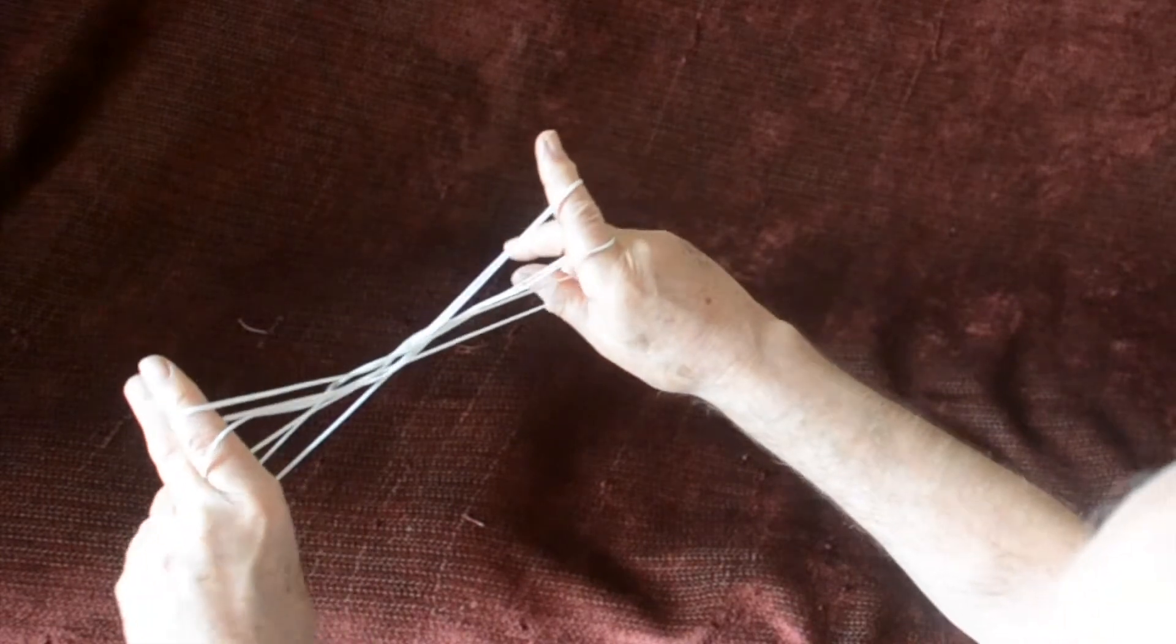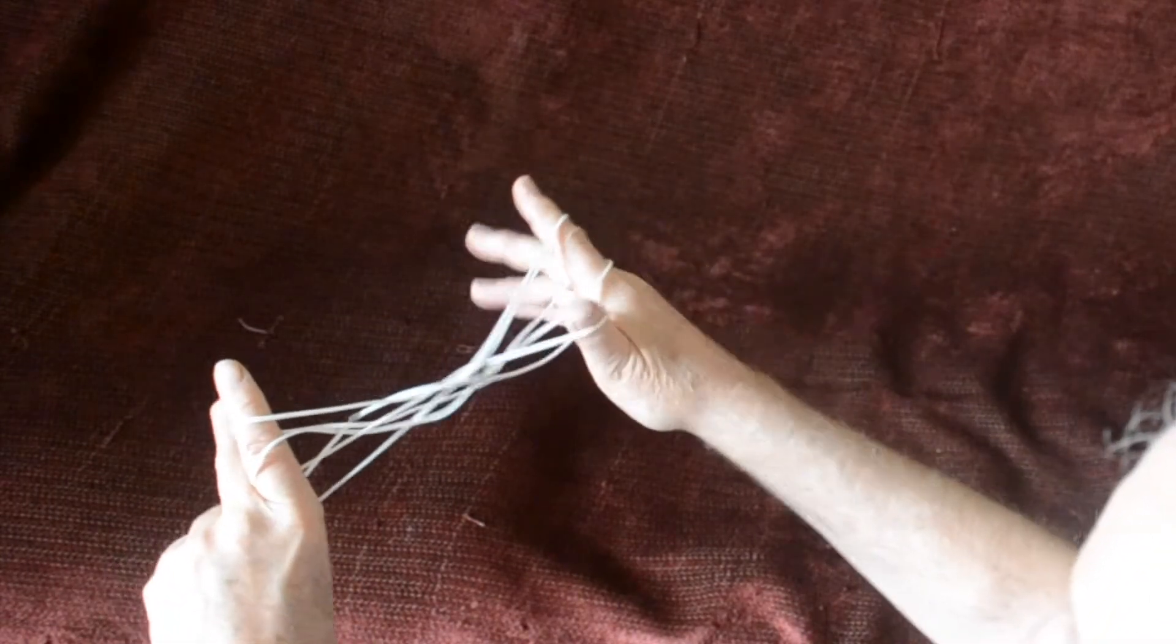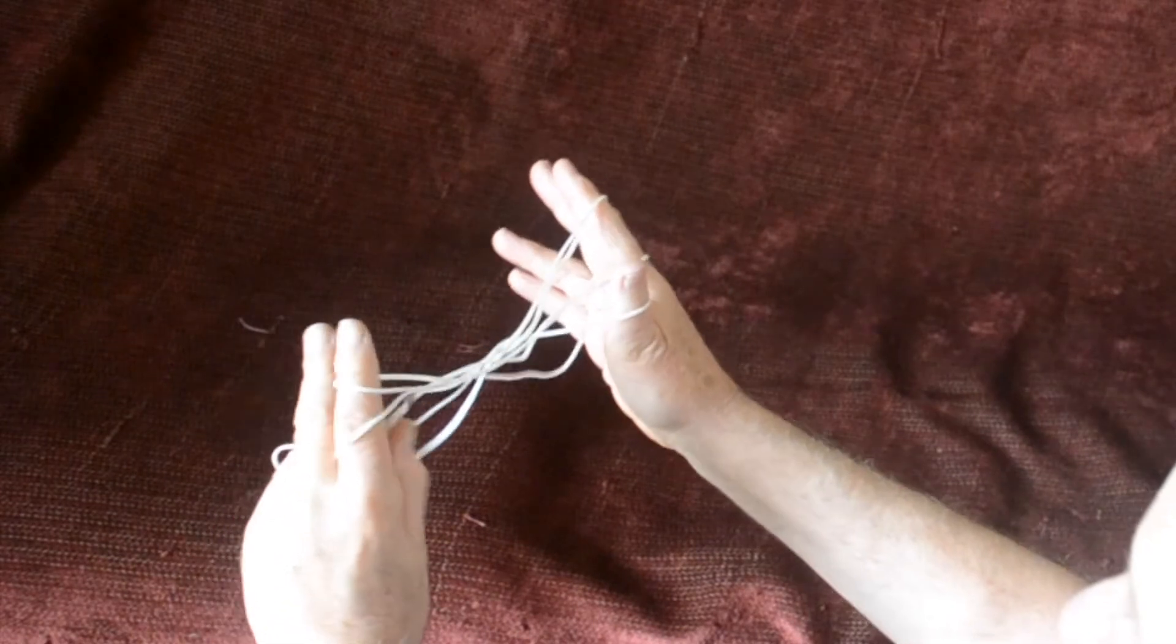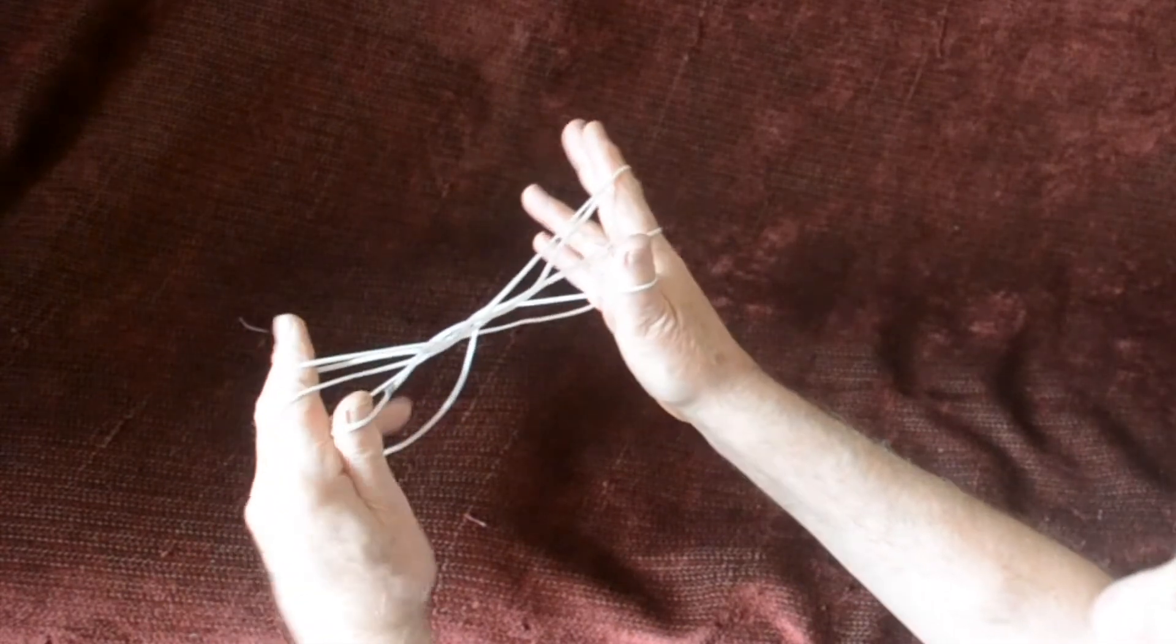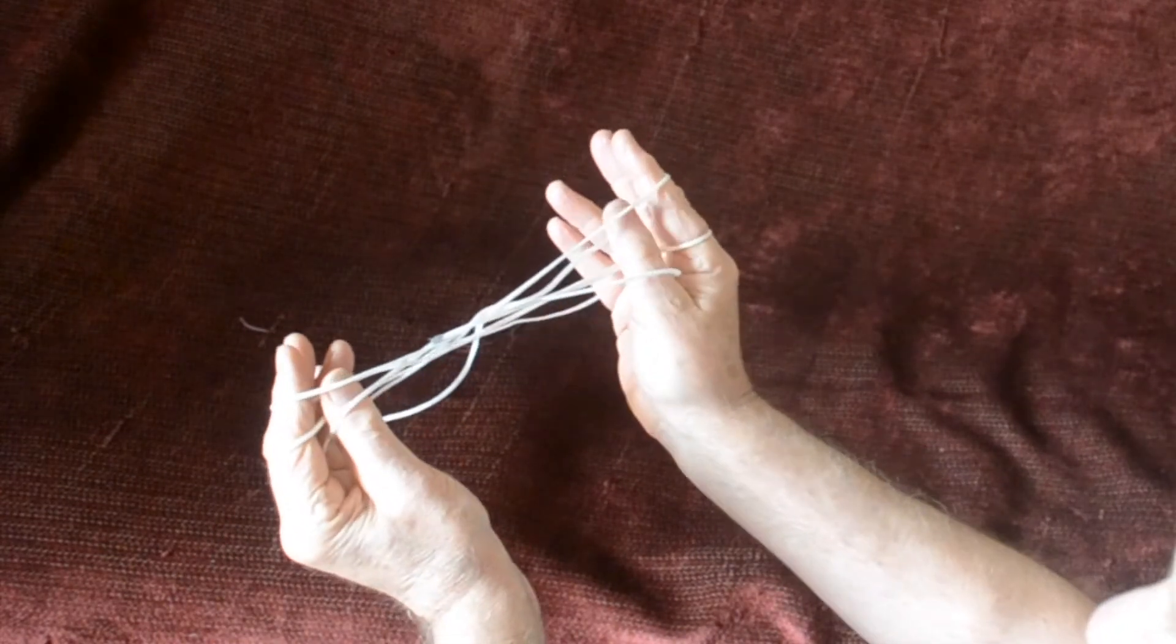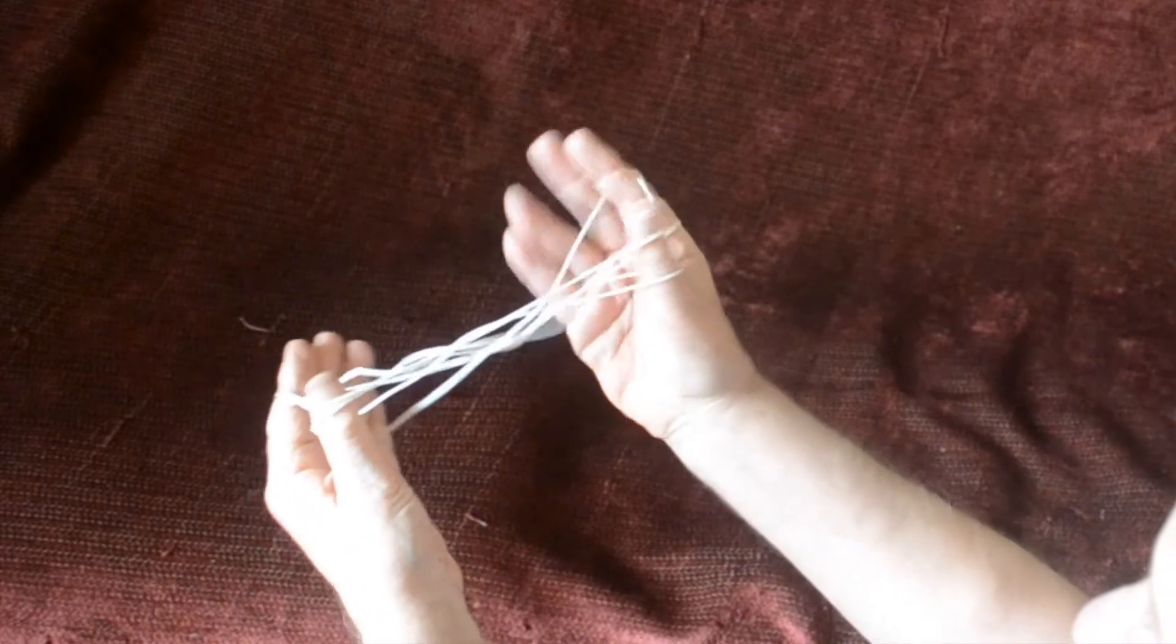Thumbs go into the little finger loops from below, pick up the near little finger string, draw towards you under all the strings. Go into the upper index loops, draw the near string out.